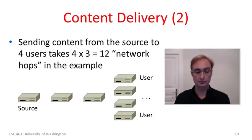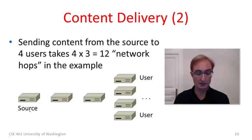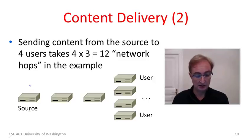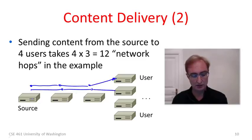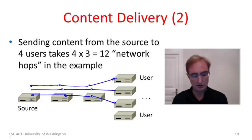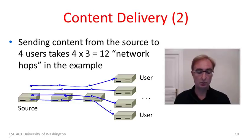Let me give you an example. We want to send a copy of content from one source to four users. If we send individual copies, we send to the first user — that's one, two, three message hops — and similarly for each user, sending a separate copy through the network each time. In this example, we took four users times three hops, or 12 network hops in total to deliver that content.